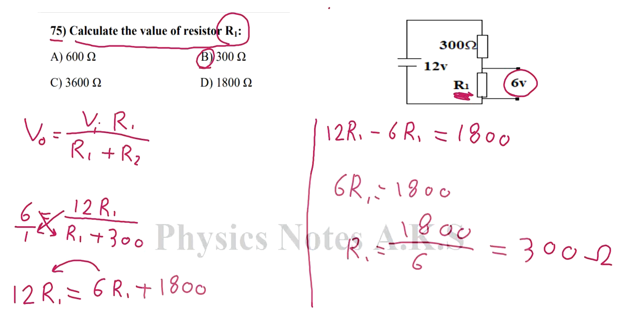We can of course solve this question in another method. We see here the battery gives me 12 volts. Since this resistor got half of that 12 volts, it means the other one will get the other half, which means they are both equal or identical, which means the R1 is 300.